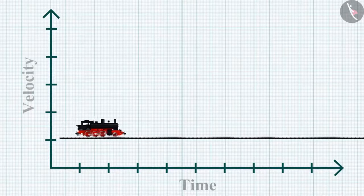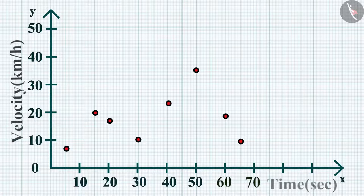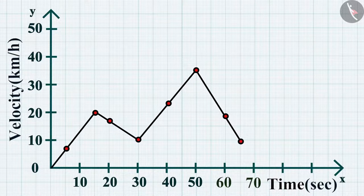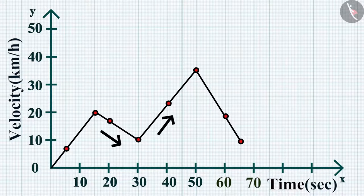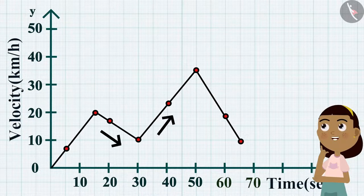Similarly, we can plot the velocity-time graph of a non-uniformly accelerated train — such a graph can have any shape. The current velocity can be less than or greater than its previous velocity, showing non-uniform acceleration. We can also determine acceleration by calculating the slope of the velocity-time graph.